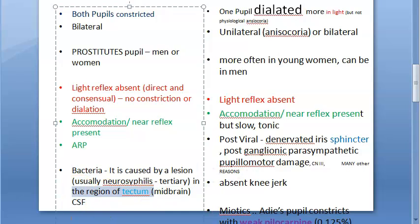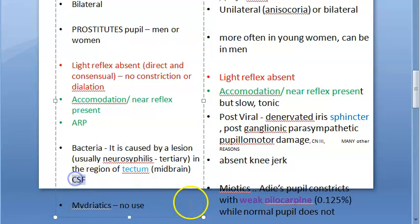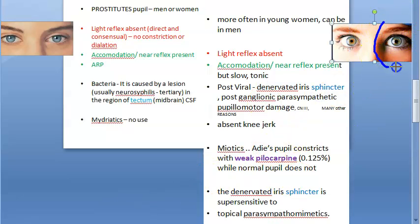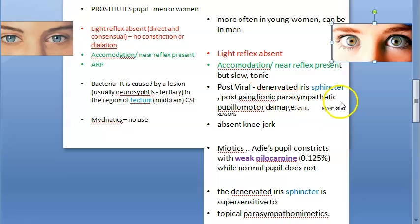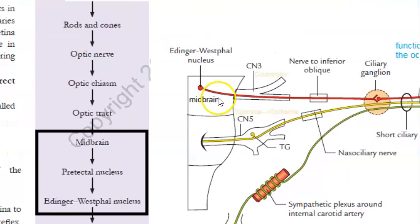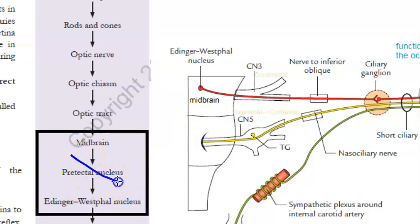The lesion in Argyle Robertson pupil is in the region of the tectum — the midbrain — and the bacteria can be detected in the CSF via VDRL testing. In Adie's tonic pupil, the problem is denervation of the iris sphincter muscle — specifically post-ganglionic parasympathetic pupillomotor damage — which is why the pupil is dilated.